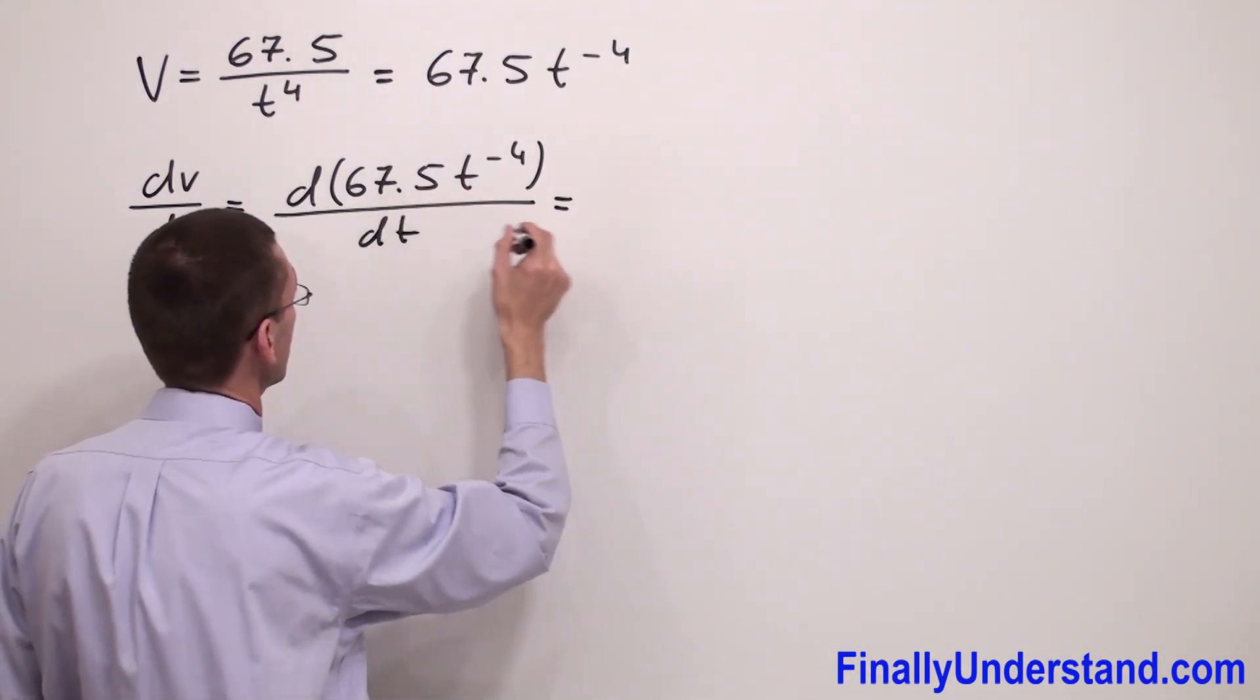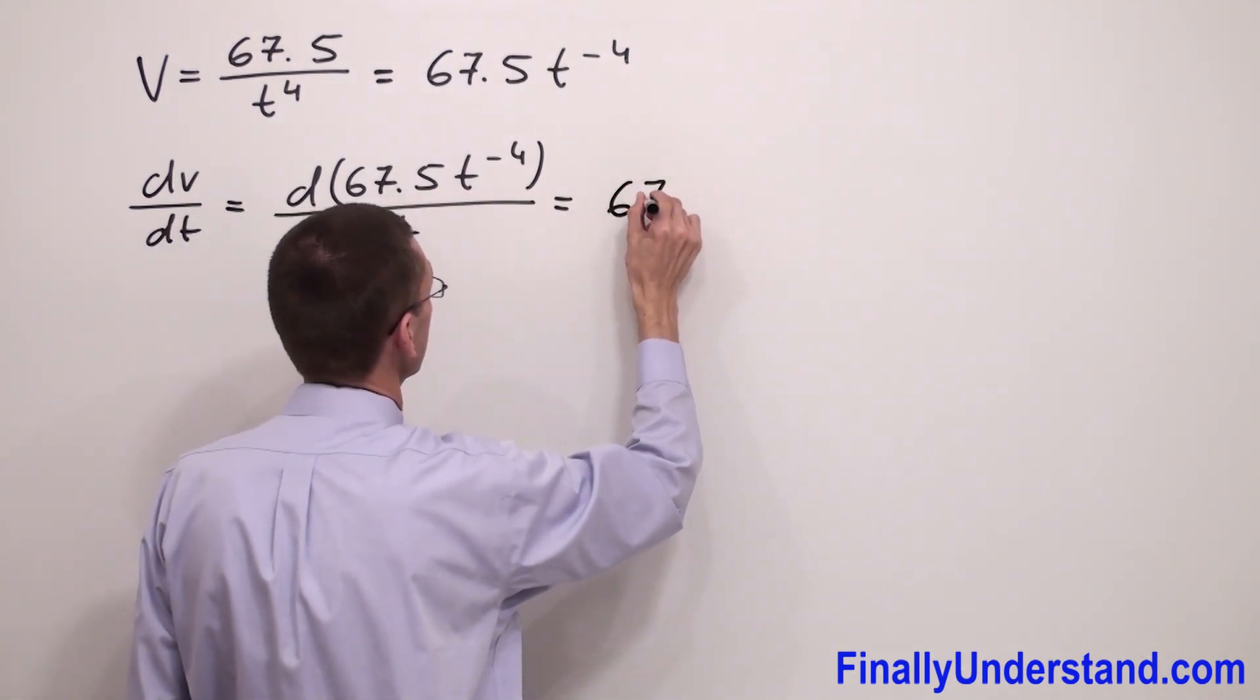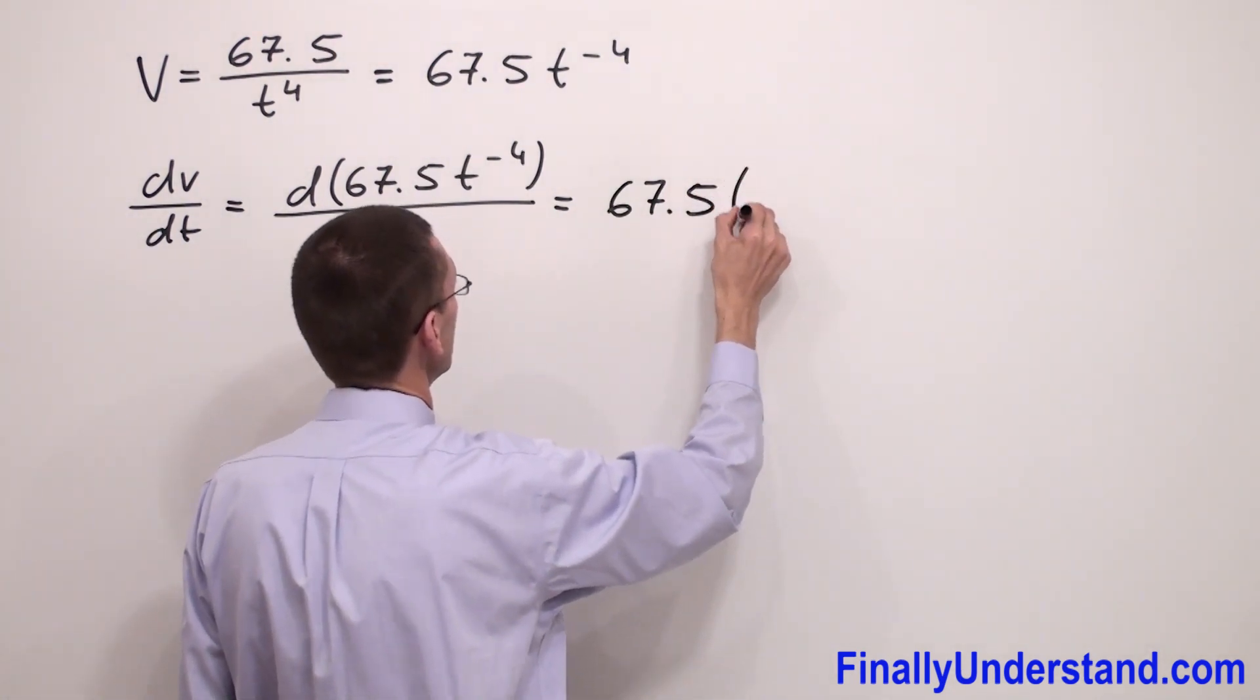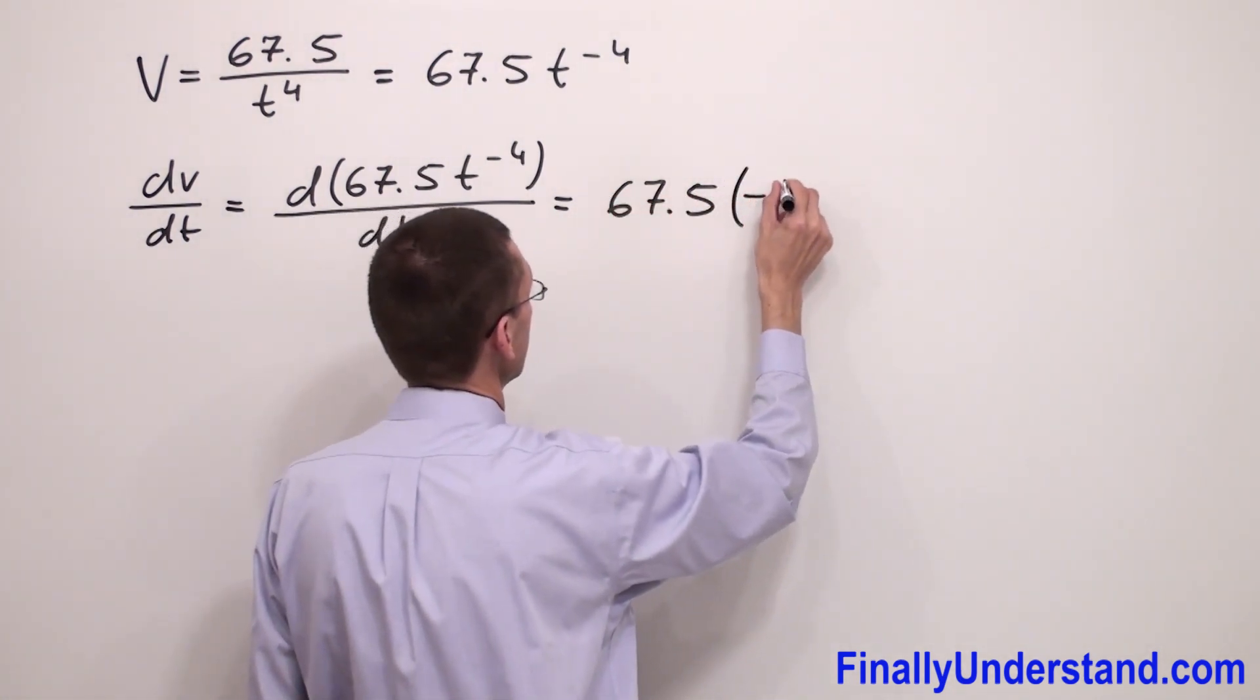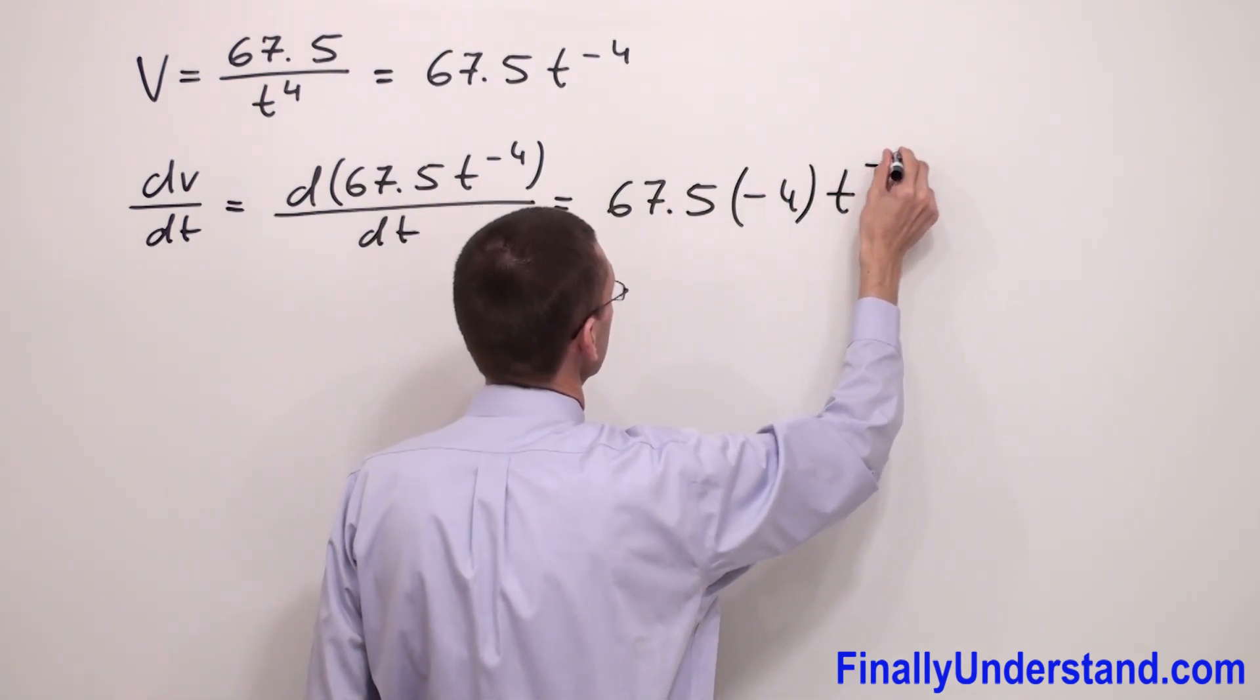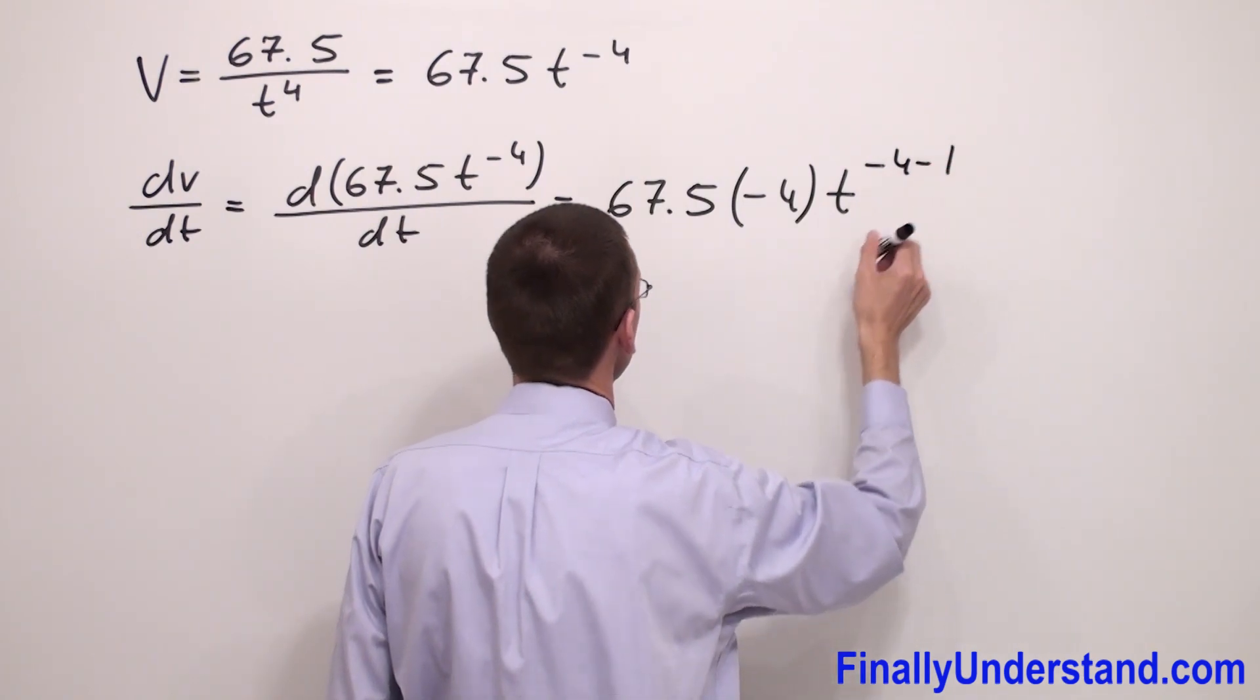Copy down the constant. So I have 67.5. Next, you're supposed to write the exponent negative 4, variable t, exponent minus 1. Negative 4 minus 1.